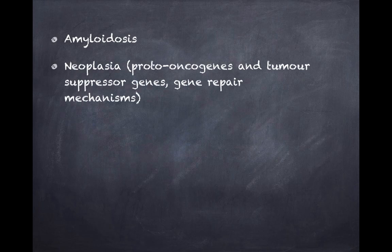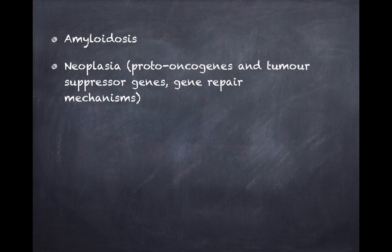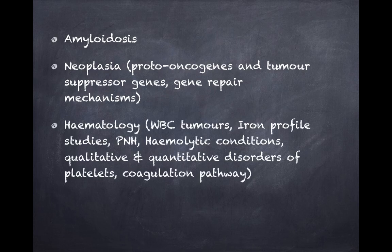For neoplasia, know the proto-oncogenes and tumor suppressor genes — their names and exactly how they act, including how mutations in proto-oncogenes result in oncogenesis. Gene repair defects are very important — make a table listing the repair defect, what disease it results in, and what the mechanism is. This is a volatile topic and extremely high-yielding, so revise it just one week before the exam. Mark it with a double star in your notes as a second-revision priority.